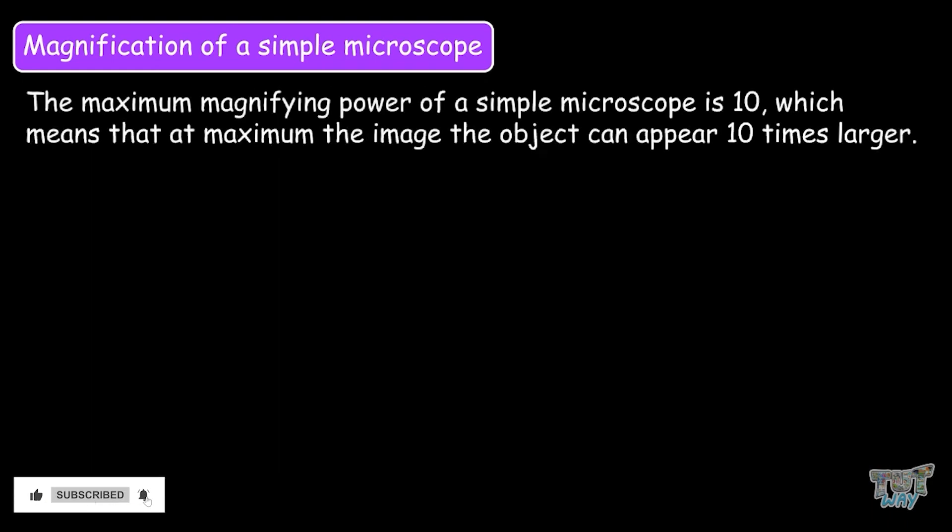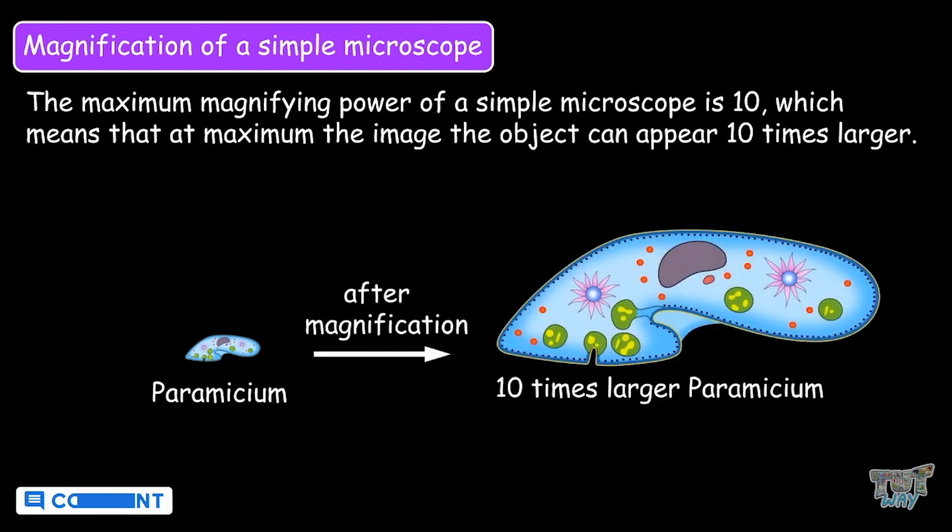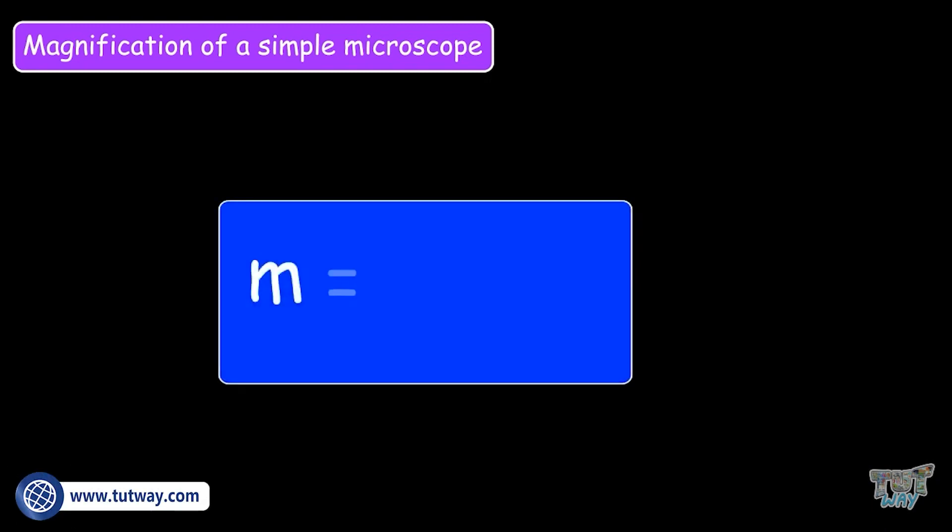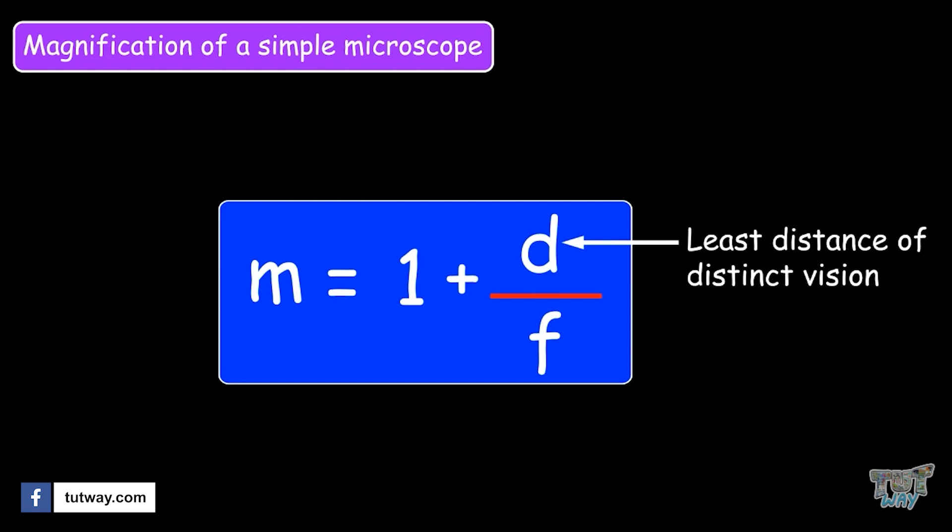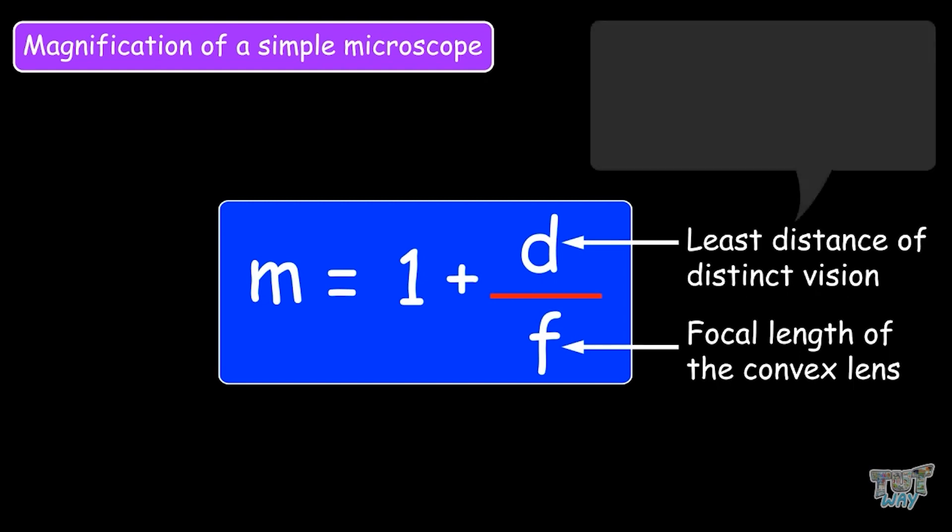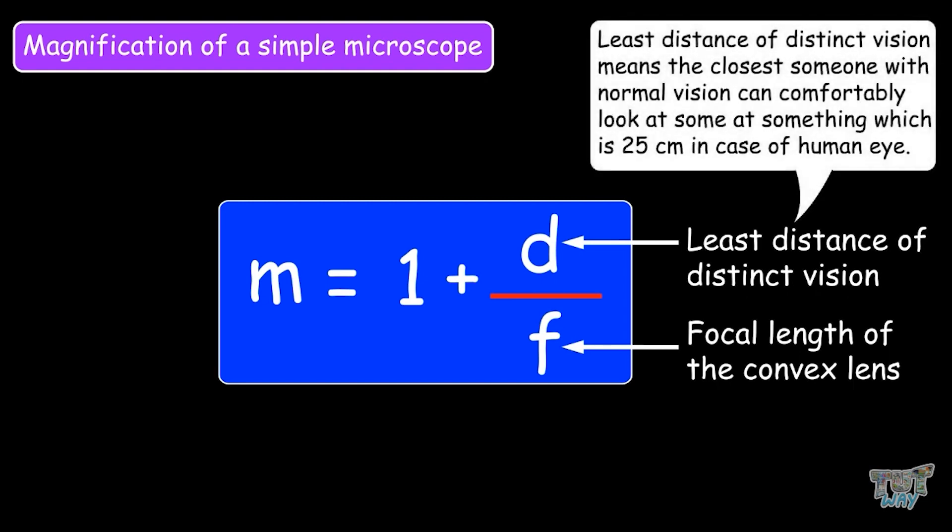The maximum magnifying power of a simple microscope is 10, which means that at maximum the image of the object can appear 10 times larger. The formula for finding the magnification of a simple microscope is m equals 1 plus d over f, where d is the least distance of distinct vision and f is the focal length of the convex lens. And the meaning of the least distance of distinct vision means the closest someone with normal vision can comfortably look at something, which is about 25 centimeters in the case of the human eye.